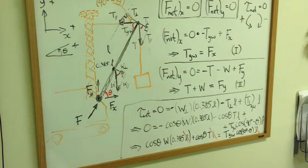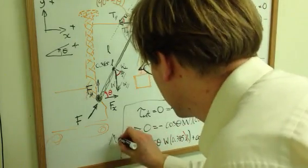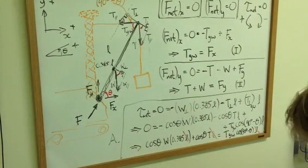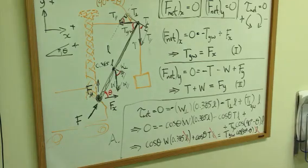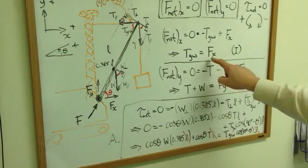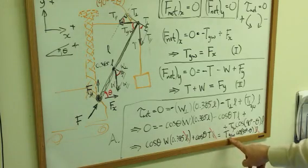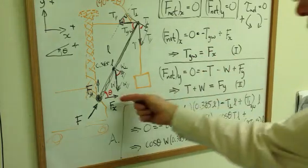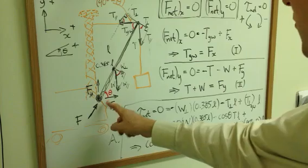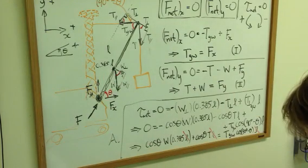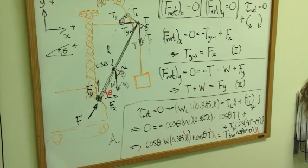All right, that will give you part A. I think everything else will fall into place quicker. Part B, find the horizontal component of the force. This is Fx. Well, once you find the tension in the guy wire, you can quickly find Fx, which is the horizontal component. Remember, its direction is going to be equal and opposite. That's the horizontal force component.